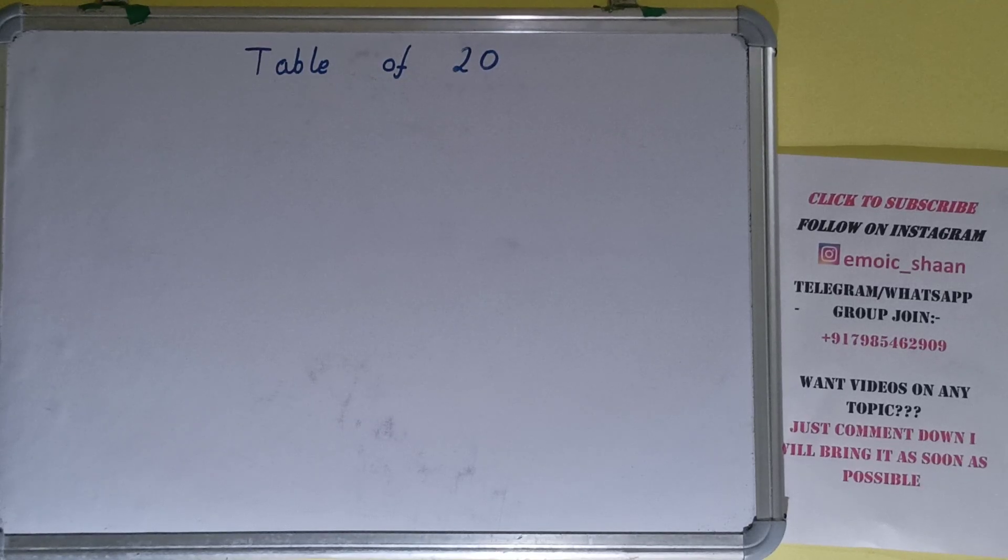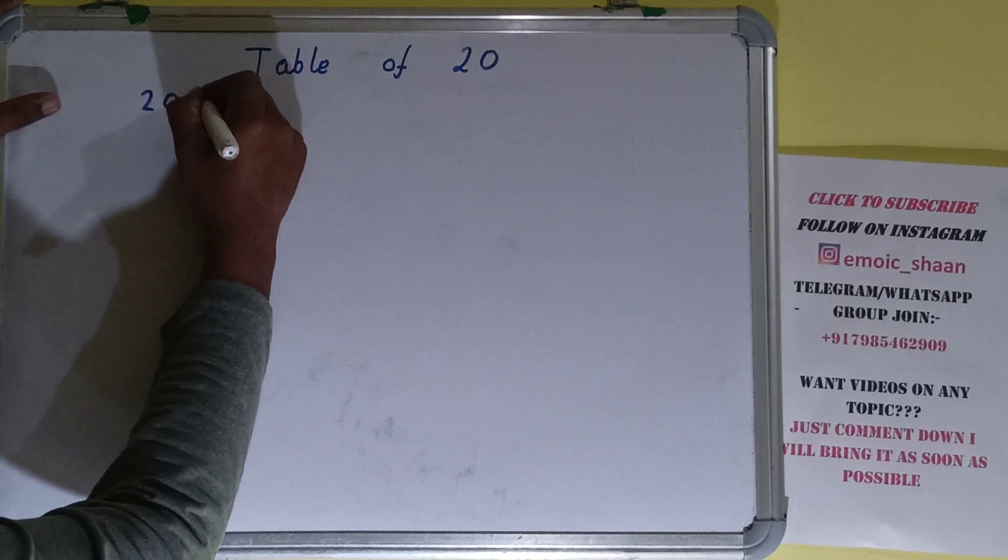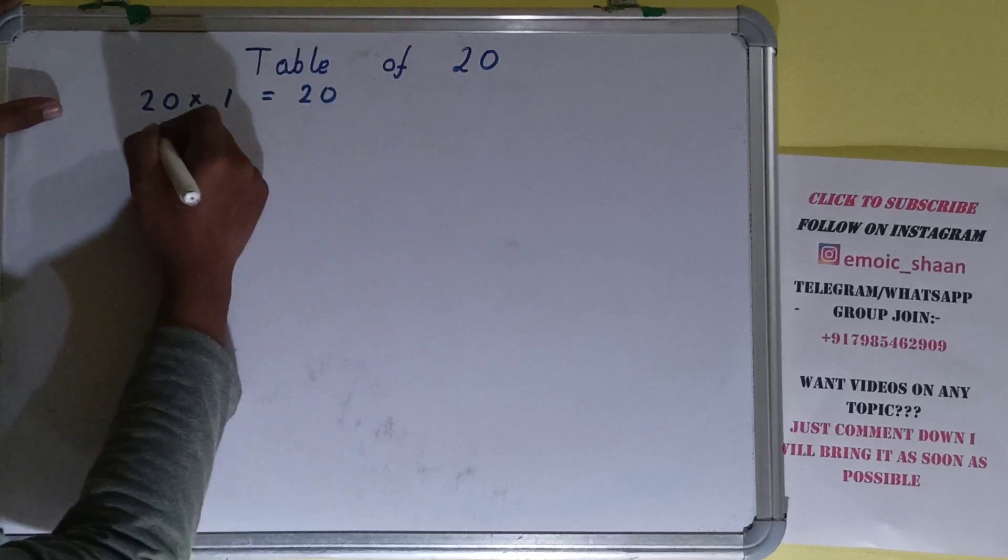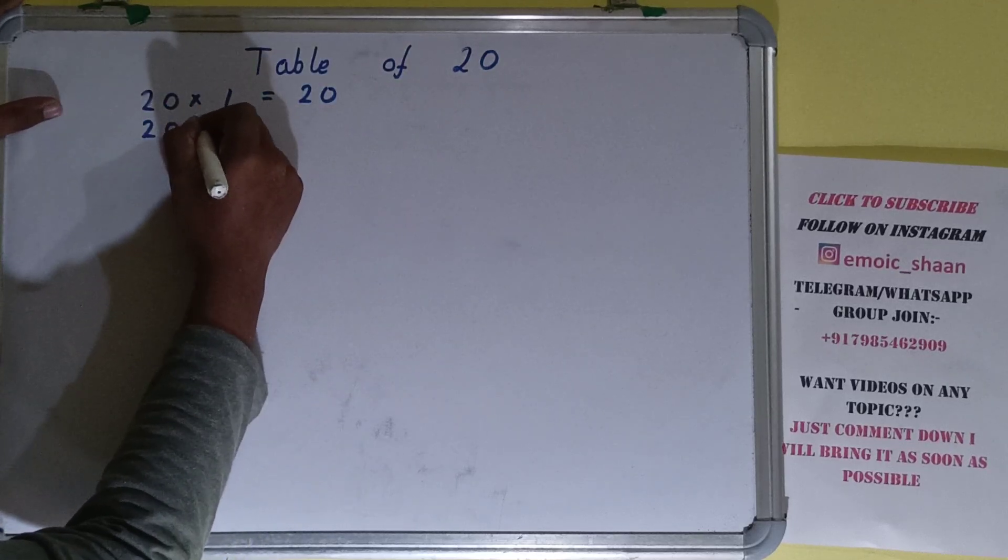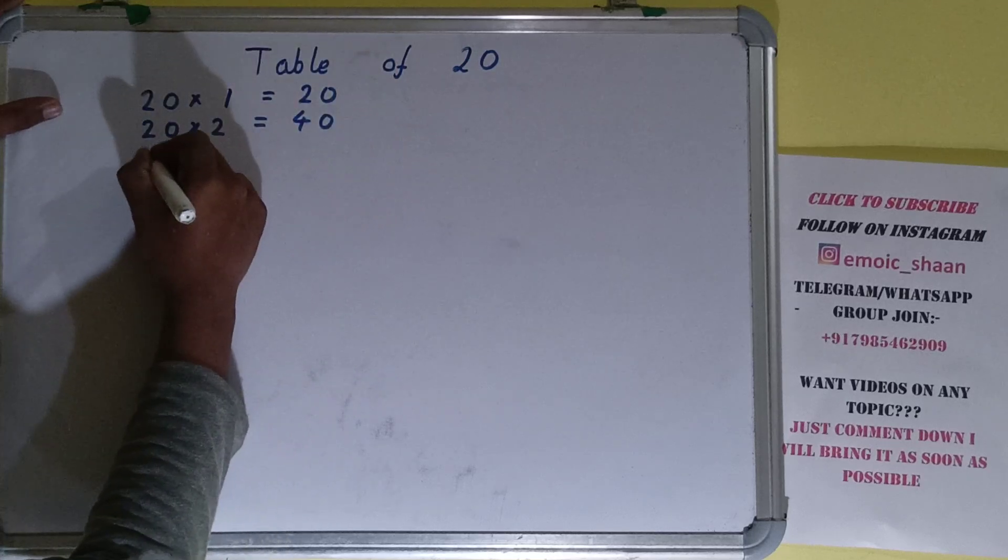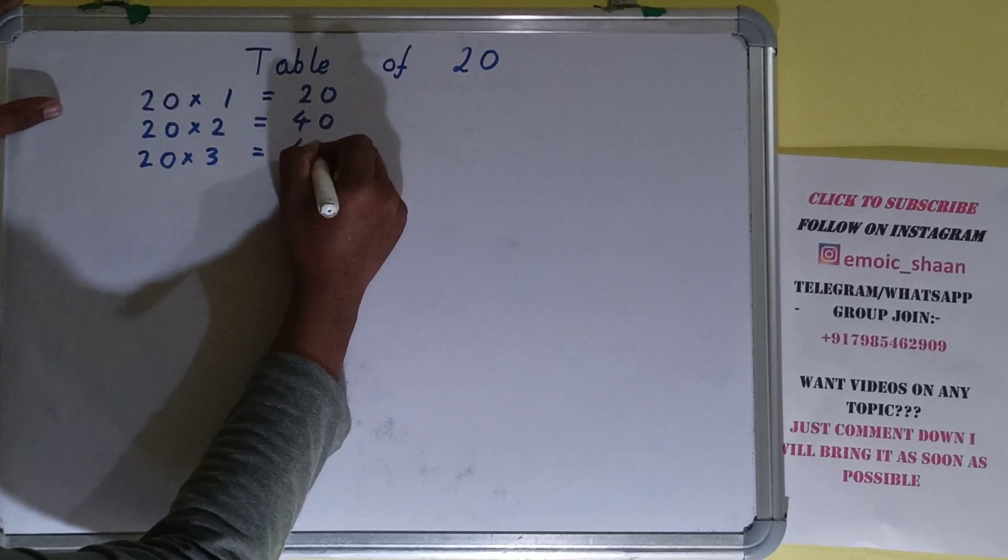Hello friends, in this video I will be helping you with the table of 20, so let's start. 20 into 1 is the number itself, that is 20. 20 into 2 is 40. 20 into 3 is 60.